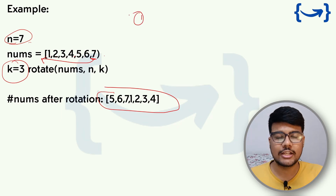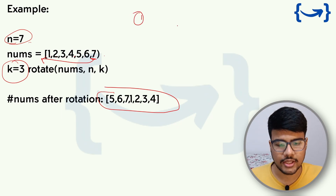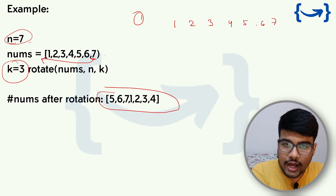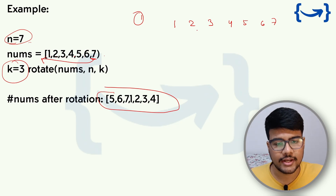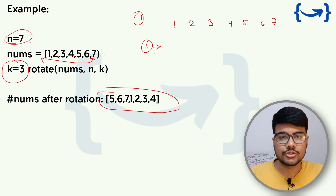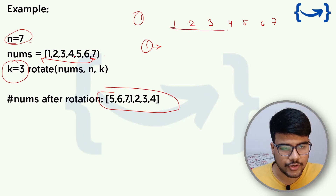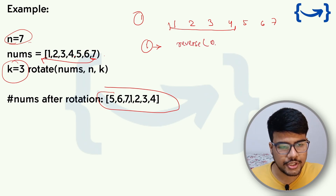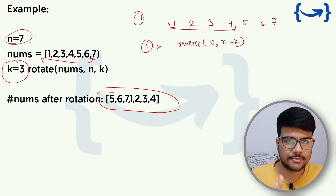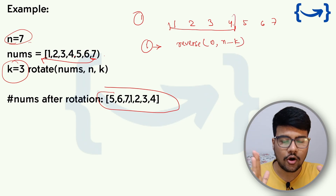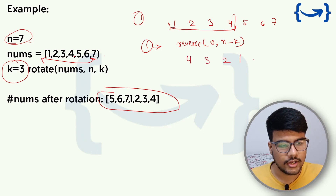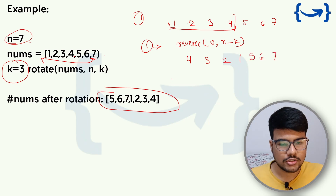There are multiple approaches. The first approach uses the reverse technique. For array [1, 2, 3, 4, 5, 6, 7] with K=3: Step 1 — reverse the first chunk from index 0 to N-K, giving [4, 3, 2, 1, 5, 6, 7]. Step 2 — reverse the second chunk from index N-K to N, giving [4, 3, 2, 1, 7, 6, 5].